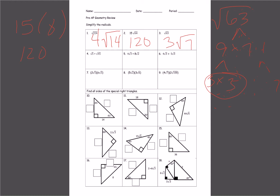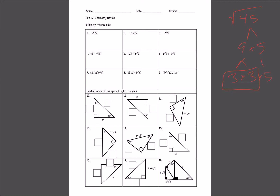To add radicals, you've got to make sure the numbers under the radical are the same. On number 4, they're different, but the square root of 45 can be simplified because that's 9 times 5, and 9 is 3 times 3. So 3 goes on the outside and 5 stays on the inside. Now I have 1 square root of 5 plus 3 square root of 5, and when you add those together you get 4 square root of 5. Number 5 is a trick — you can't combine those because the numbers under the radicals aren't the same. Number 6 is straightforward: 4 plus 5 is 9, so this is 9 square root of 3.